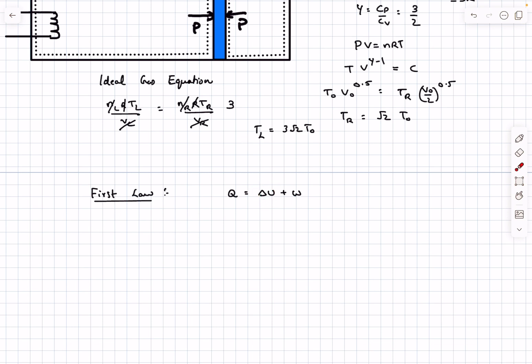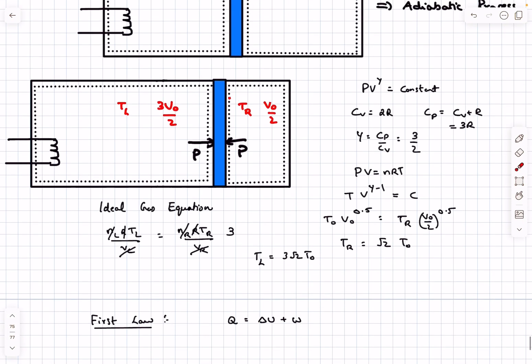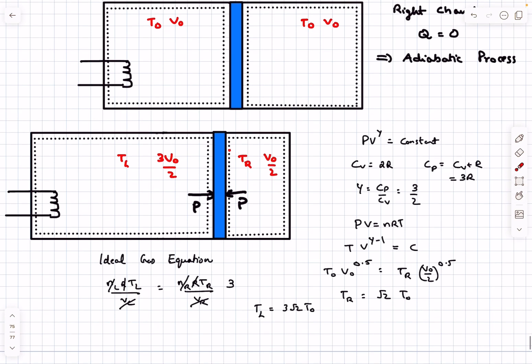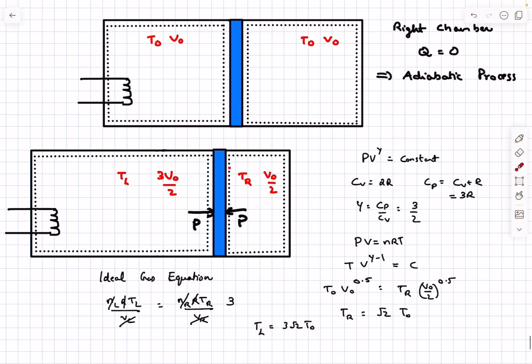Now as we know the initial and final temperature we can determine ΔU. Let's talk about the work. Is there any work being done on our left system? Yes, because this boundary layer is moving towards the right. For work to be done on a system, two conditions must be met: there must be a force acting on the boundary layer, and the boundary has to move. Both are true here.